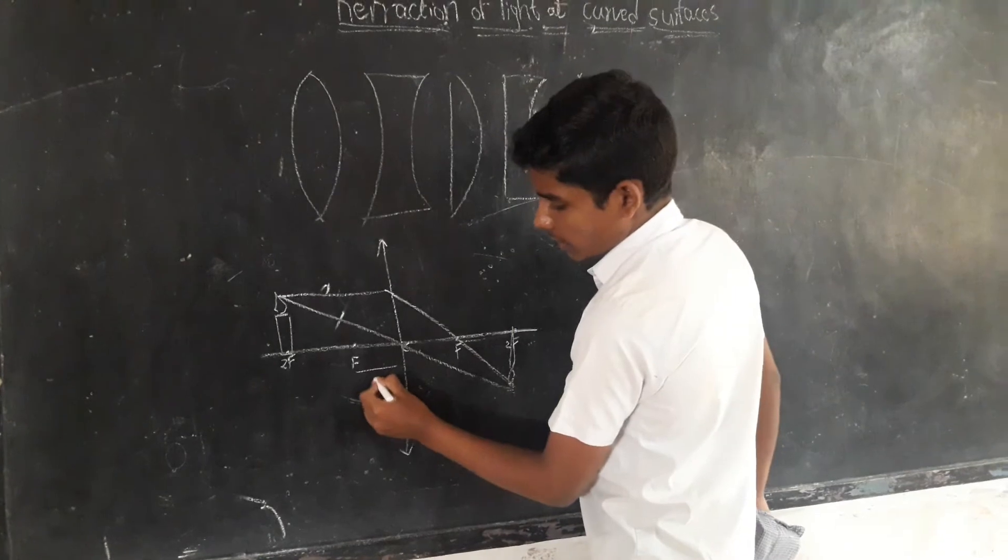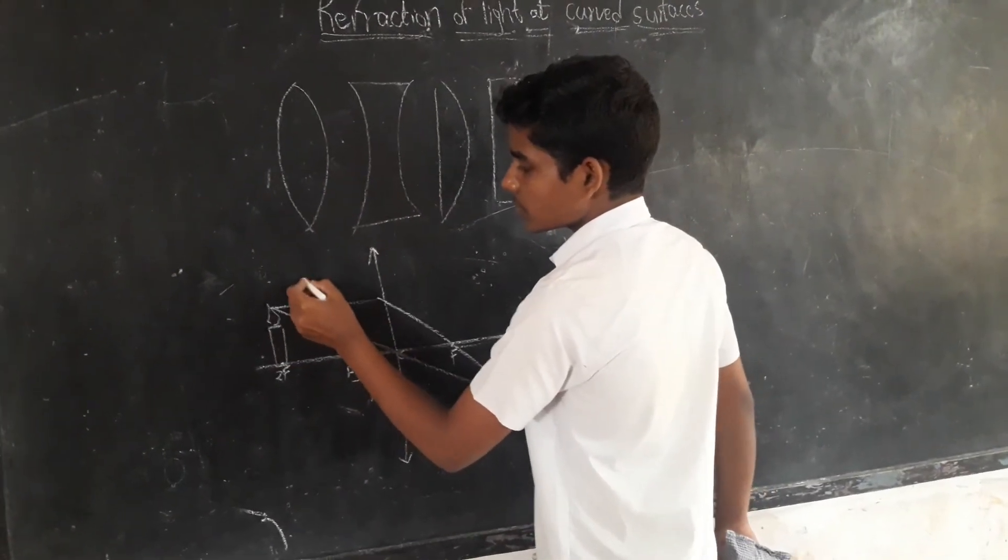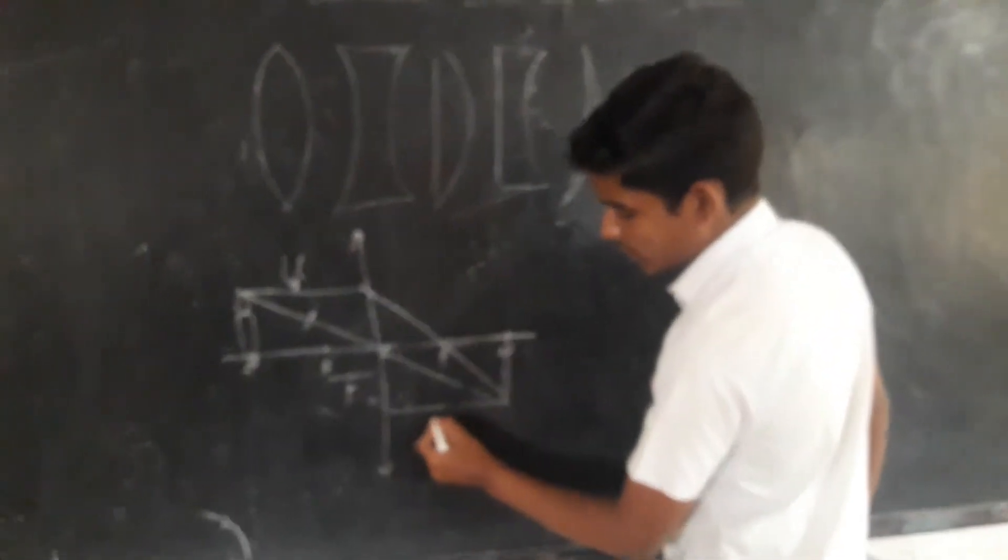This is the focal length, denoted by F. This is object distance, denoted by u. This is image distance, denoted by v.